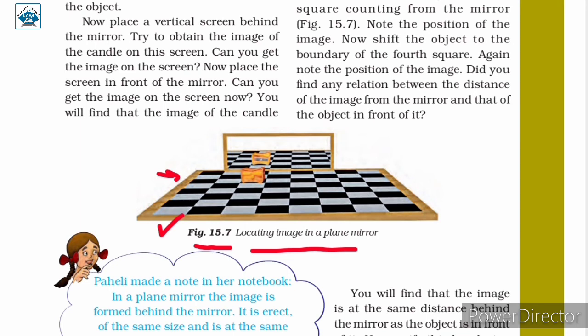When you perform this activity, you can observe that the image is at the same distance behind the mirror as the object is in front of the mirror. You can verify this by placing the object anywhere on the chart paper or chess board. From this activity, we can conclude that the image formed by a plain mirror is at the same distance behind the mirror as the object is in front of it.